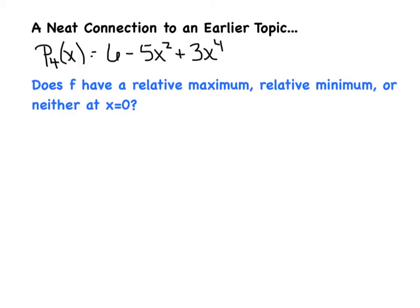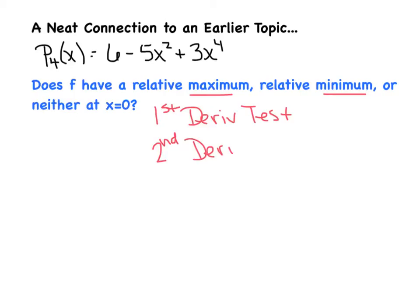Whenever we investigate maximums or minimums, we have a choice: do we want to use the first derivative test, or the second derivative test? There are times throughout the year where you have the freedom to pick whichever one you want, and then there are other times where we don't have enough information to use one of them, and therefore we have to use the other by default.